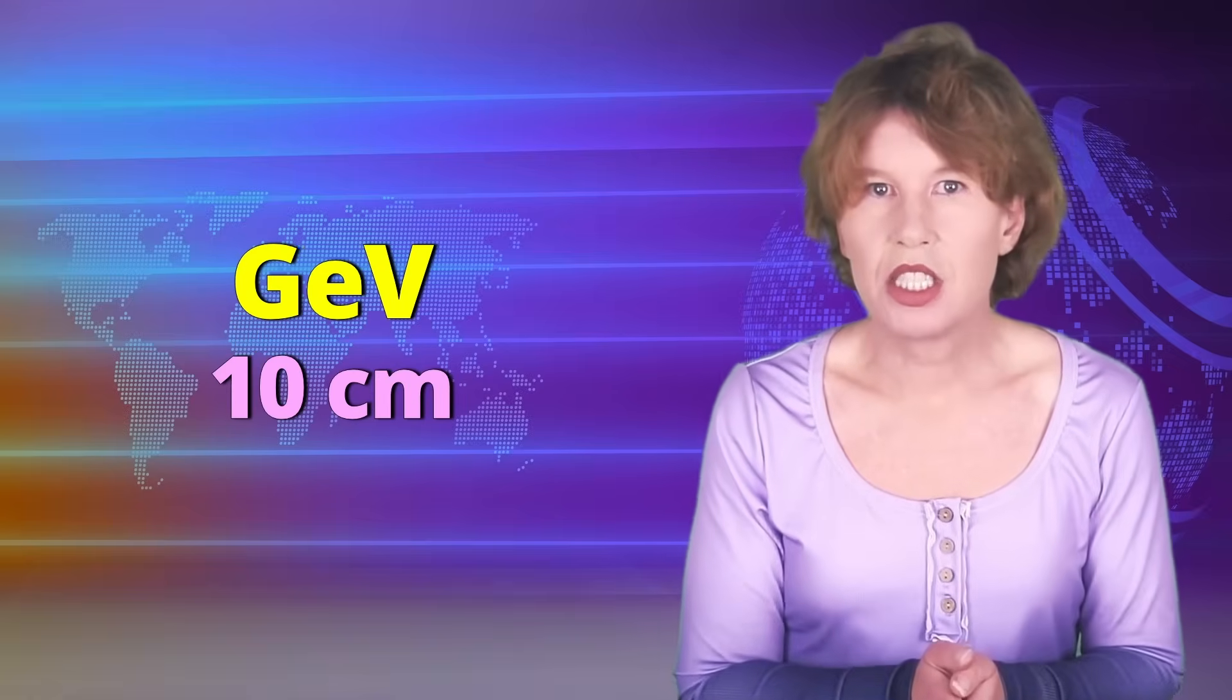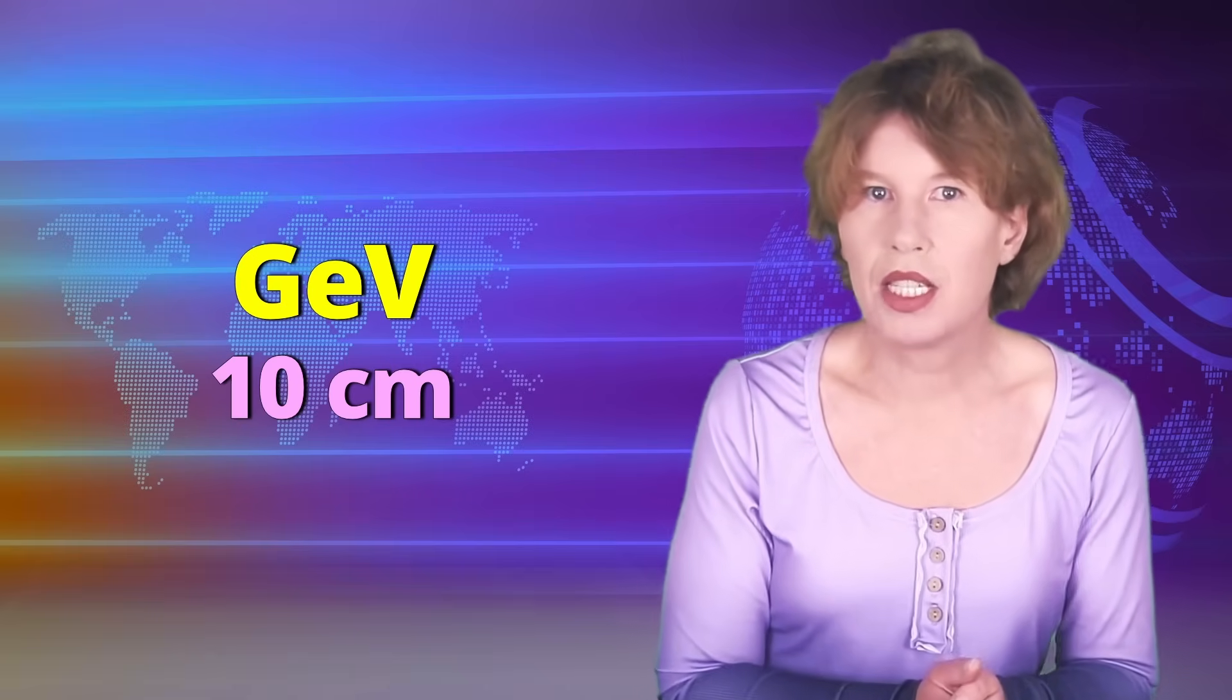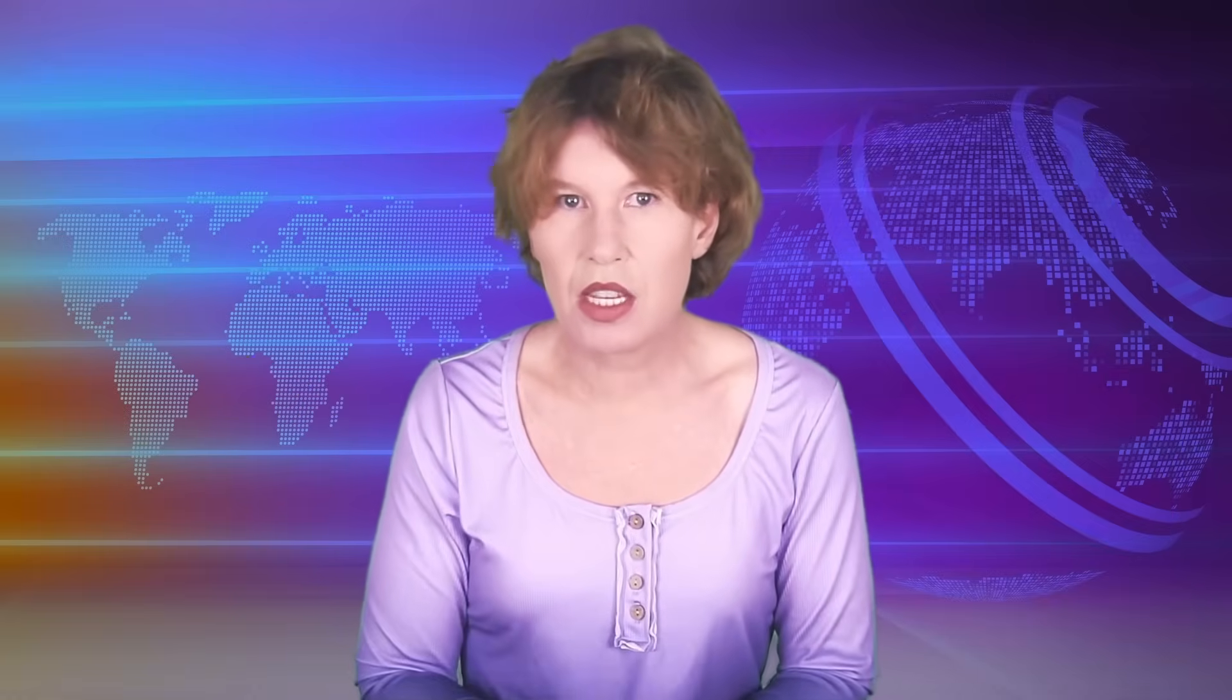In comparison, the LHC has a pre-accelerator that speeds protons up to similar energy, but that's more than 100 meters in circumference. Wakefield acceleration isn't yet good enough to actually build bigger particle colliders, but producing muons, now that's a different thing.